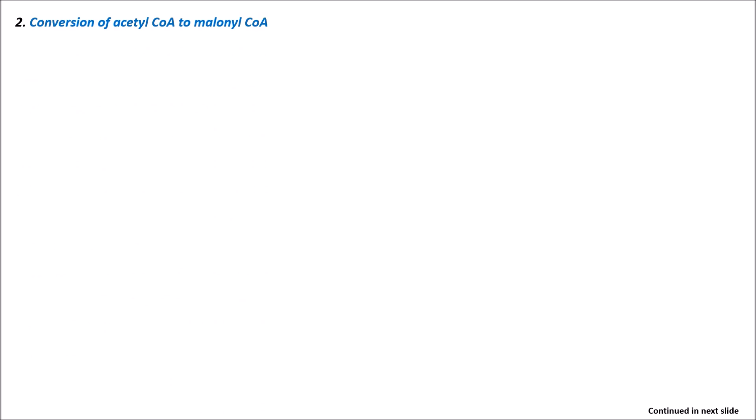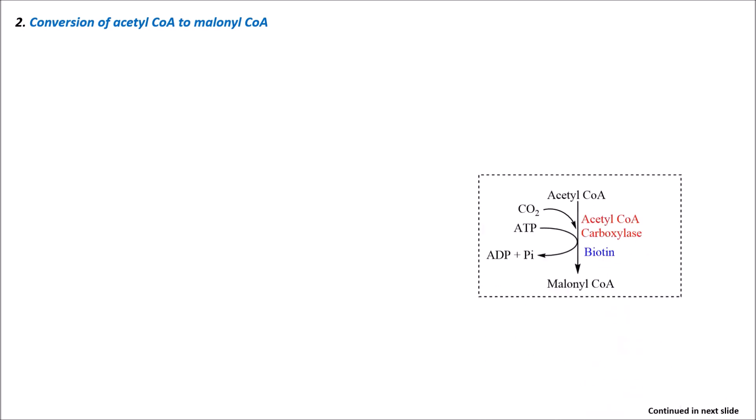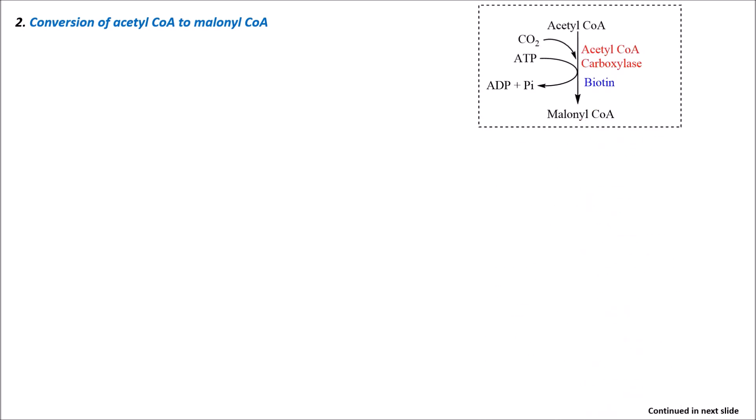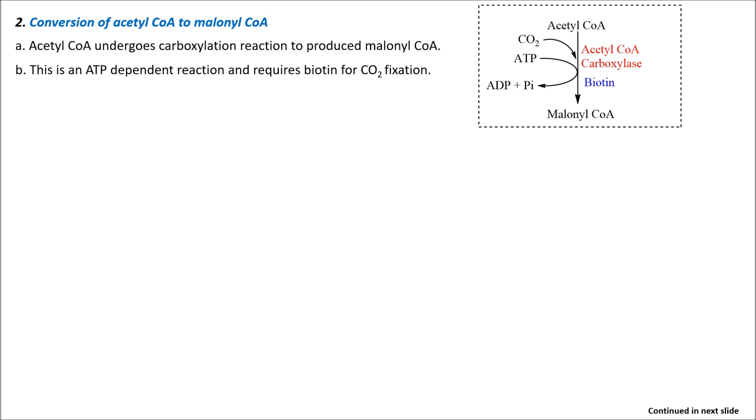The second stage is the conversion of acetyl coenzyme A to malonyl coenzyme A. In this reaction, a carboxylation takes place — carbon dioxide is added in the presence of the enzyme acetyl coenzyme A carboxylase. This fixation of CO2 takes place with the help of biotin, and there is utilization of energy: ATP is converted to ADP. This completes the second stage.